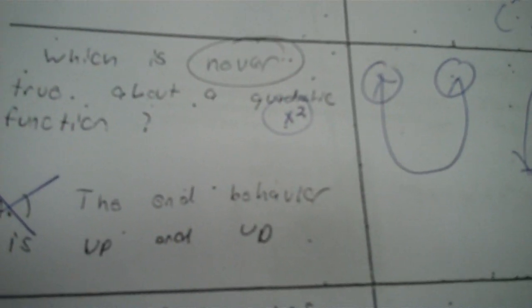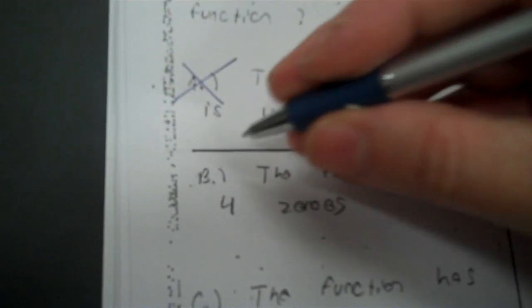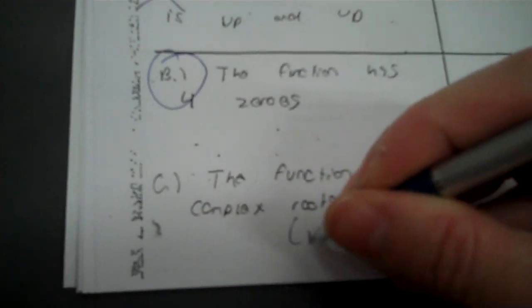The function has four zeros. When I solve X-squared equations, they have two answers. Zeros mean how many answers, and there's no way to get four, so it never has four zeros. The function has complex roots means I solve for X squared and get i. Well, that happens all the time — we get i's all the time in here, so B is going to be our answer. That's never true about it.